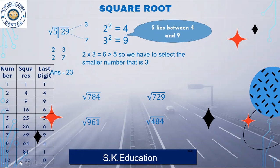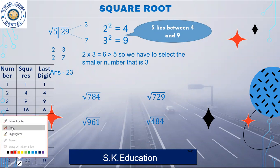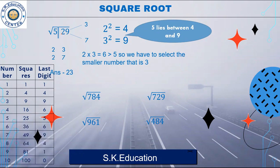So I will make groups of 2 because this is the square root. First of all, 9 is the last digit. The last digit 9 corresponds to 3 and 7. So you write 3 and 7 here — we will write these two digits here: 3 and 7.